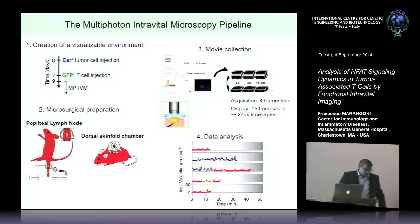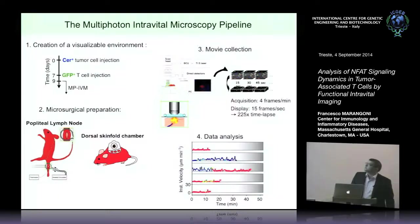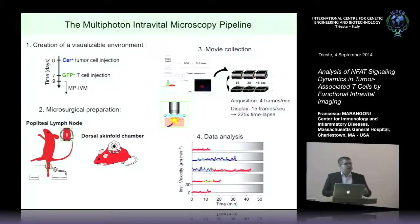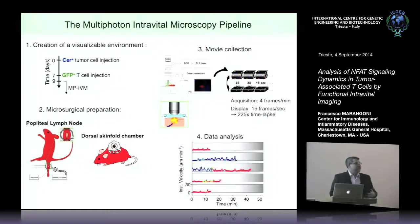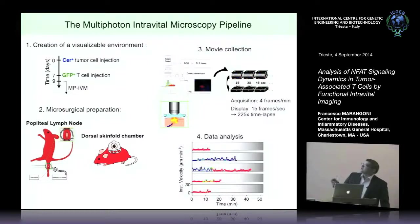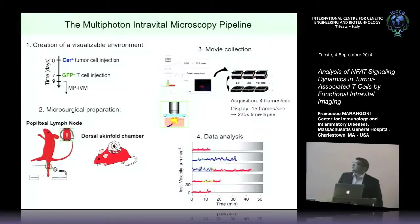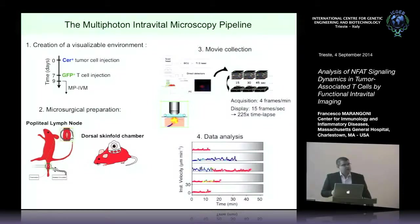Our favorite approach is multiphoton intravital microscopy. The first thing we have to do is create an environment in vivo amenable to visualization — typically we transfer cells labeled with genetically encoded fluorescent proteins. For example, we could inject a tumor cell line labeled in blue through the protein cerulean, and then seven days later come with GFP-positive T cells. Starting from a couple of days later, we can begin our intravital microscopy.